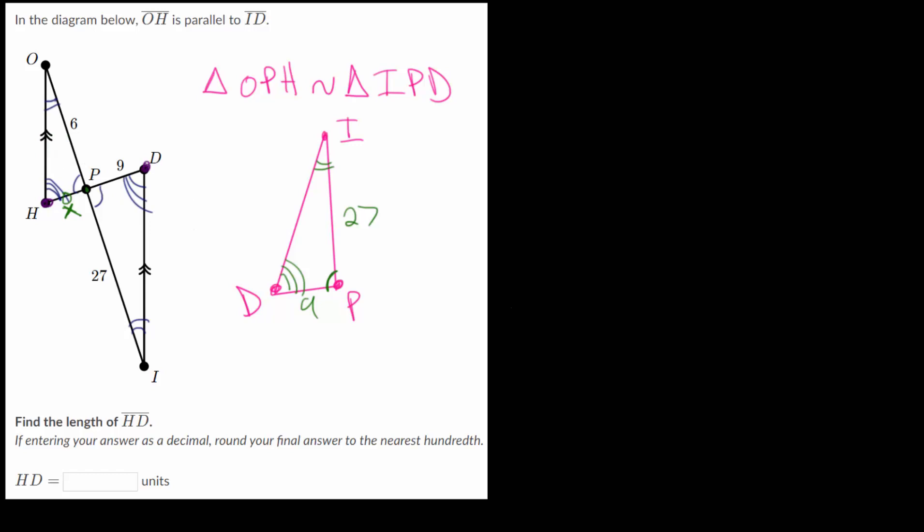And to figure out that proportionality constant, we can look at the ratios of side lengths. So if we look at corresponding sides, we can look at OP and IP, and we can look at their ratio. So we have that, the bigger triangle, this IP.